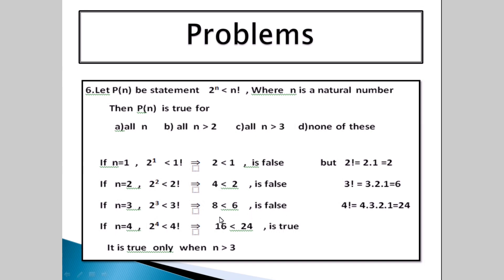So it is true only when n is greater than 3. The answer is option C: all n greater than 3. Similarly, 3 to the power of n less than n factorial is also true.